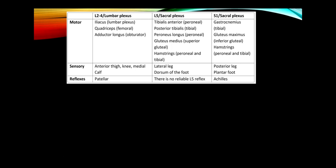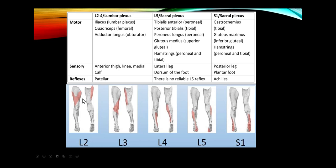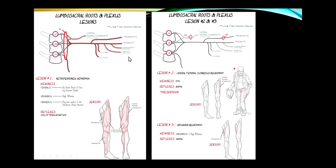For the lower extremity: L2-3-4 nerve roots in the lumbar plexus produce proximal weakness and loss of the patellar reflex. L5 mainly causes foot drop due to tibialis anterior weakness. S1 is a very common board question — back pain with shooting pain down the back of the leg — and you lose the Achilles reflex. Patients on heparin can develop a spontaneous retroperitoneal hematoma involving the lumbar plexus: sensory loss in the thigh and medial calf, proximal weakness, and absent patellar reflex.